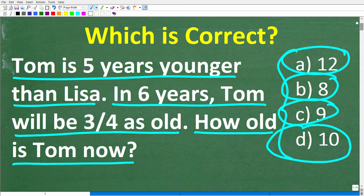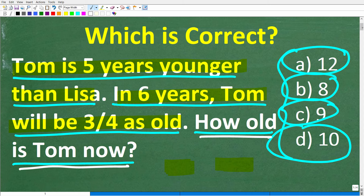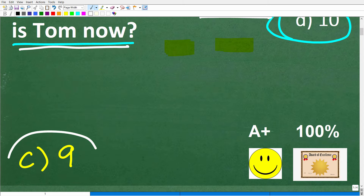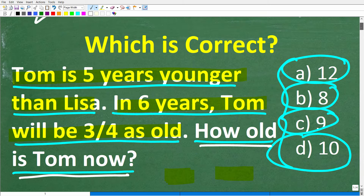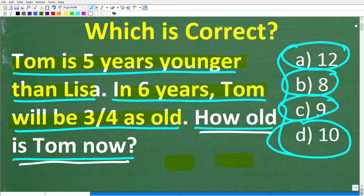Let's take another look at this problem. We're talking about two time frames: right now and six years from now, and we have two people, Tom and Lisa. Tom is five years younger than Lisa. In six years, Tom will be three-fourths as old as Lisa. The question is how old is Tom right now? The correct answer is Tom is nine years old right now. If you got this right, you definitely get an A+, a 100%, and a Certificate of Excellence for your ability to solve a math word problem about age.